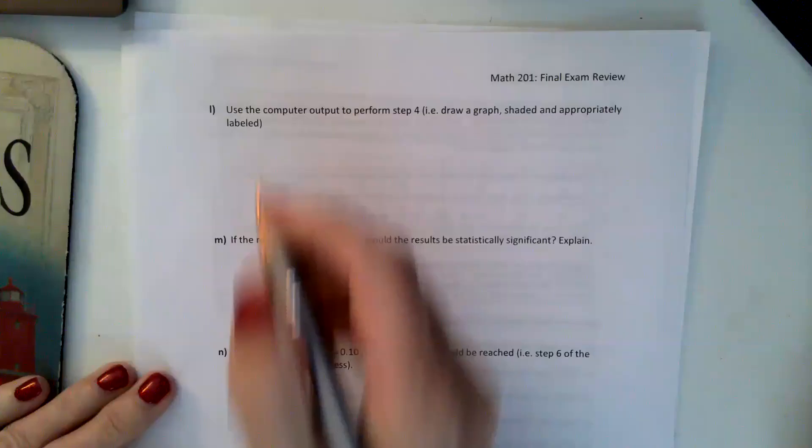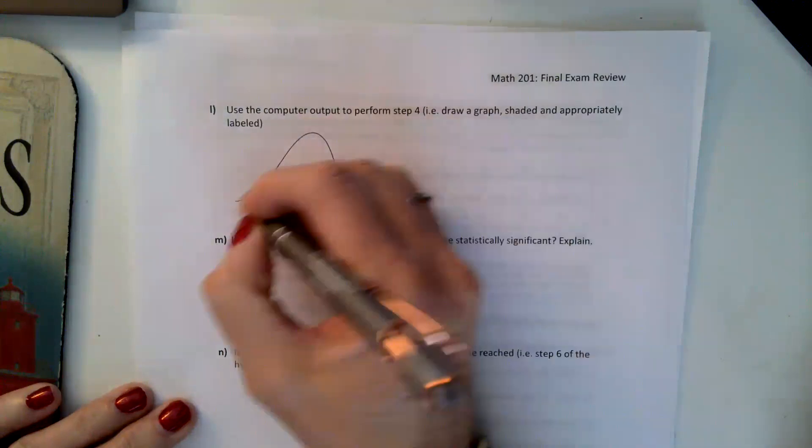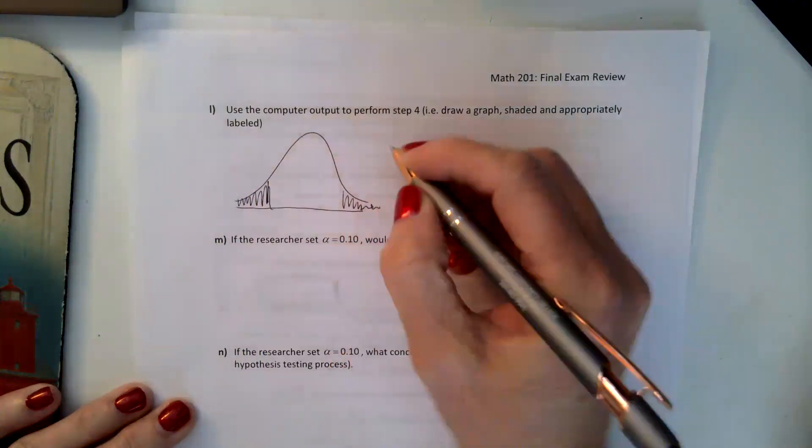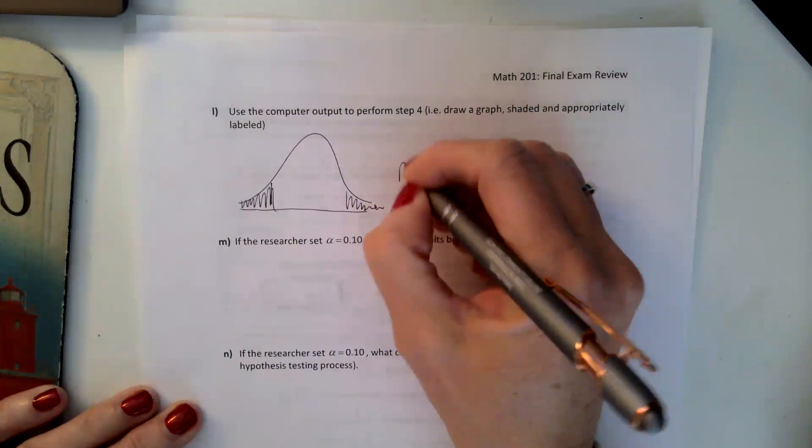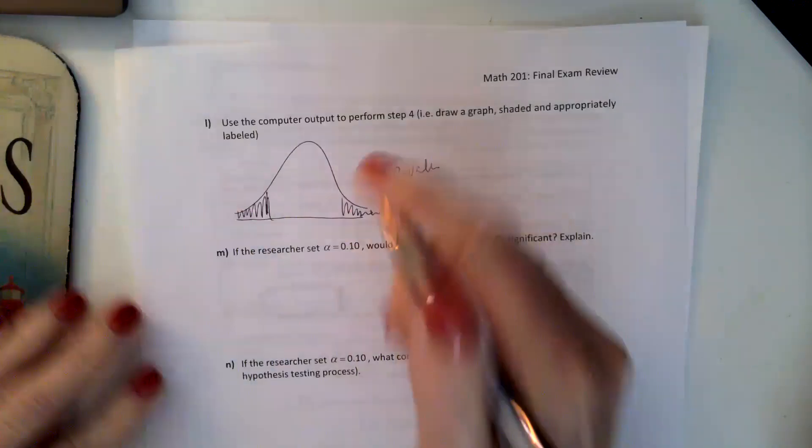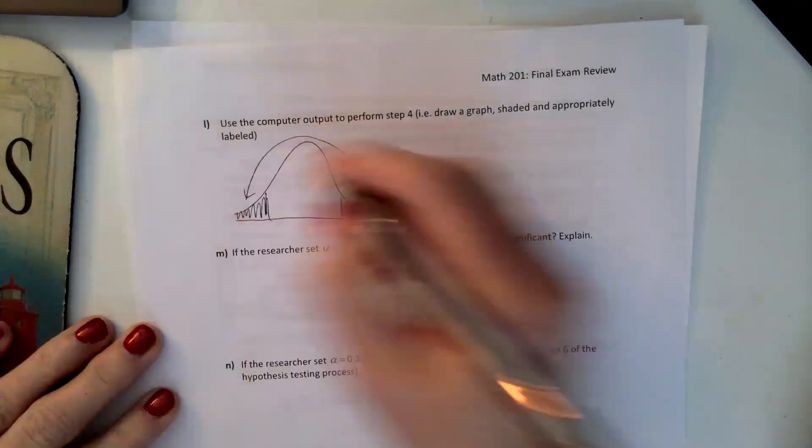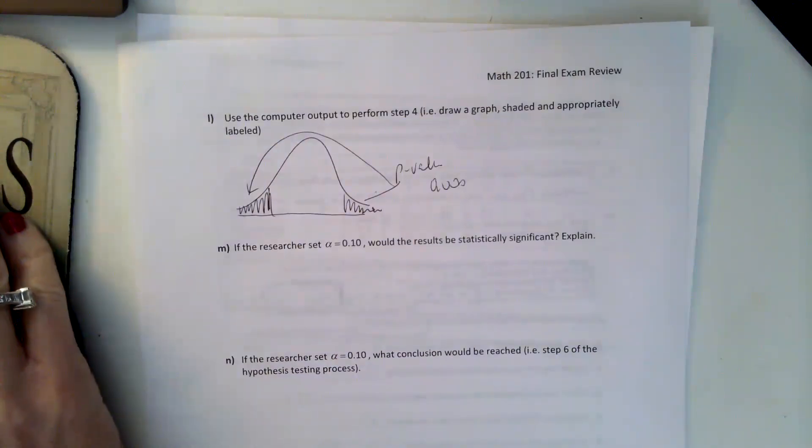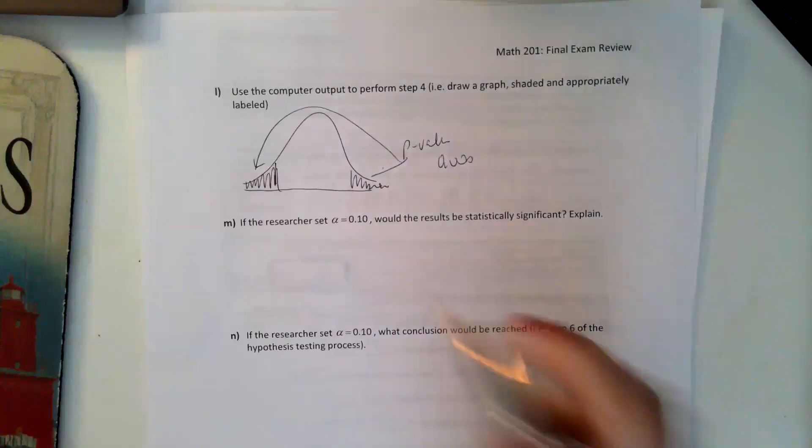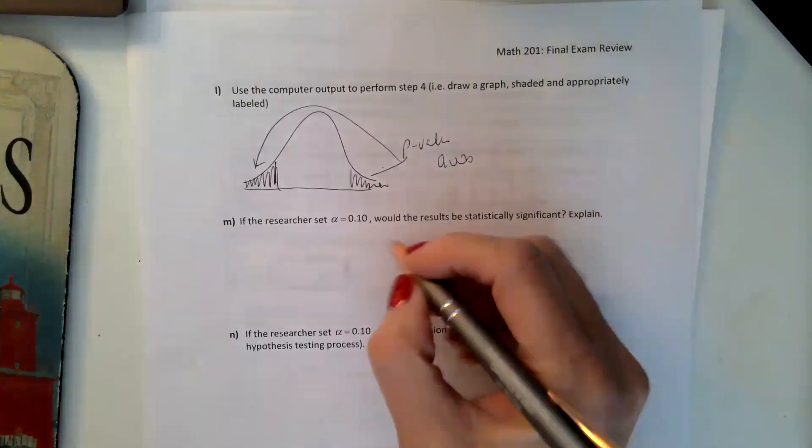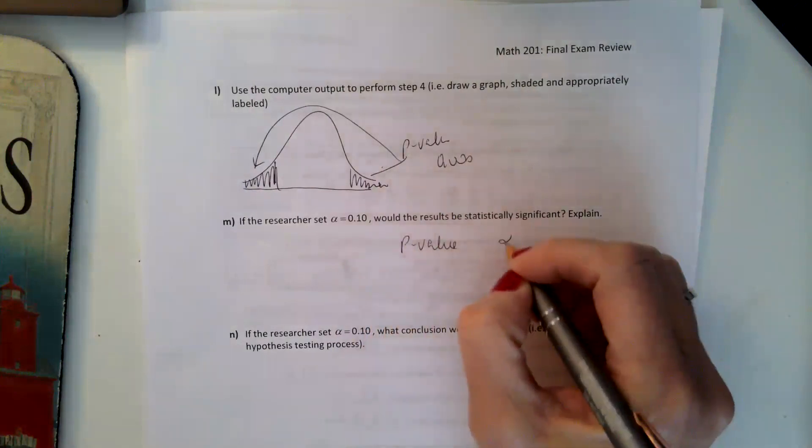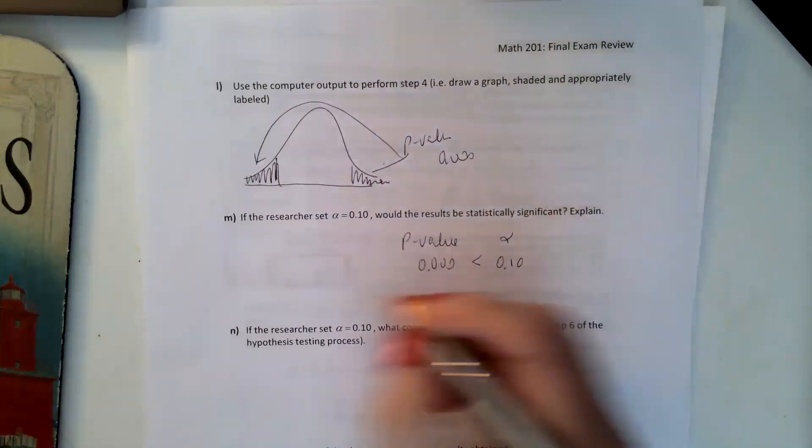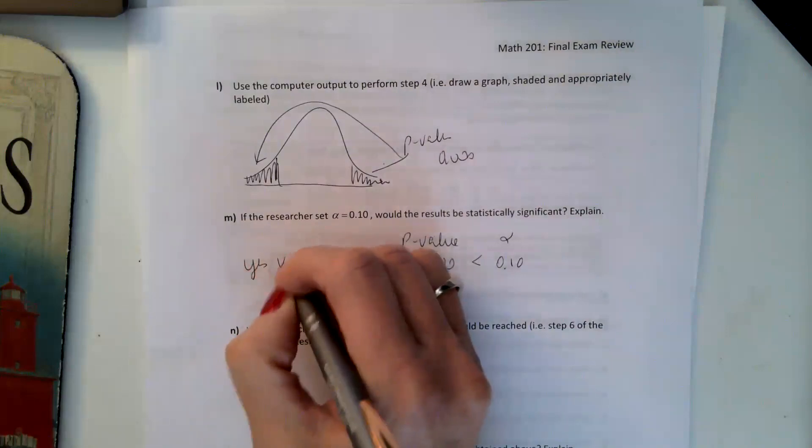And then letter L said, use the computer output again to do step 4. So we're going to draw our circle. And because it's a not equal to, we're shading on both sides. And our p-value, well actually you should barely even see the shading because the p-value is so small. And it says the researchers set alpha at 0.1. Would the results be statistically significant? So that's where we put our p-value compared to alpha. And our p-value is essentially zero, which is definitely less than 0.10. So yes, very significant.